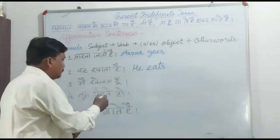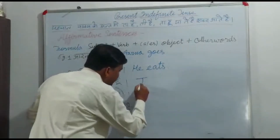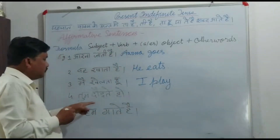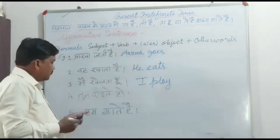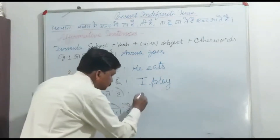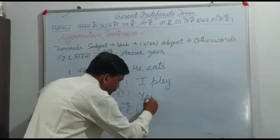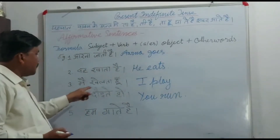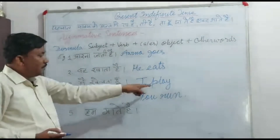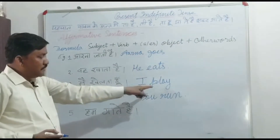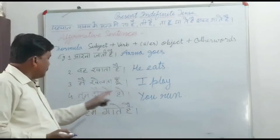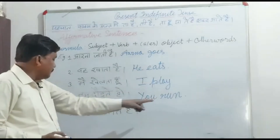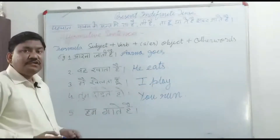'Main khelta hoon' — I play. 'Tum daudte ho' — You run. Yahan par maine verb ki first form mein ES nahin joda, original form likhi hai — 'play'. Aise hi 'You run' mein bhi verb ki first form likhi hai. 'Hum gaate hain' — We sing.